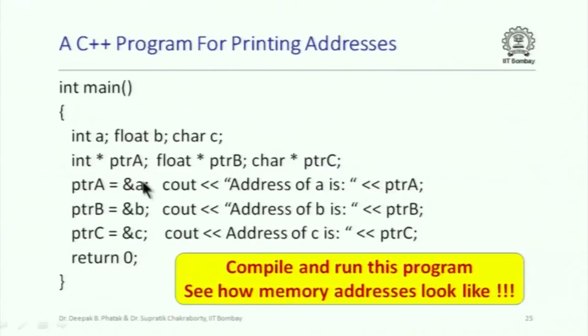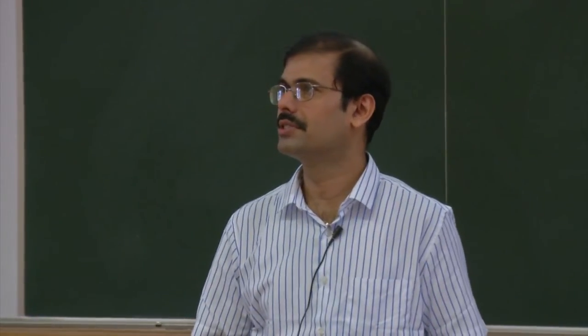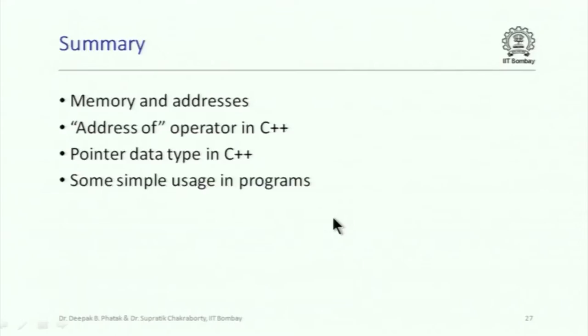Here is a simple program which has three variables of type int, float, and character, and three pointer variables of type int*, float*, and char*. It finds the addresses of these variables, stores them in the corresponding pointer variables, and prints them out. This is probably the first time you get a real feel of what is happening inside the computer — you are actually seeing the addresses of the memory locations being used to store your variables.